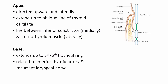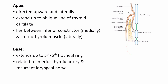The apex is directed upwards and laterally, extending up to the oblique line of the thyroid cartilage. The apex is sandwiched between the thyrohyoid muscle and the inferior constrictor muscle of the pharynx. Above the apex, there is the superior thyroid artery and the external laryngeal nerve — any swelling of the thyroid gland will compress this nerve and artery, and it cannot extend beyond these two muscles. At the base, the gland extends up to the 5th and 6th tracheal rings, where the recurrent laryngeal nerve passes upward and the inferior thyroid artery is present.